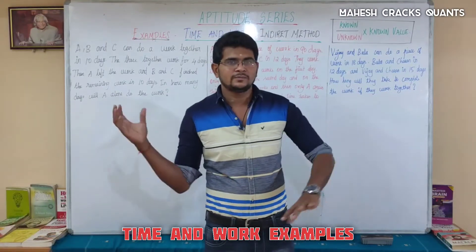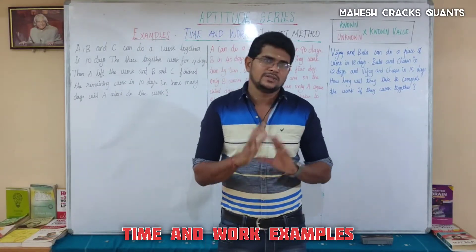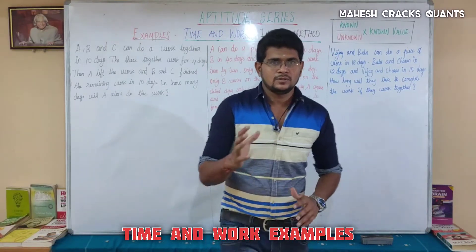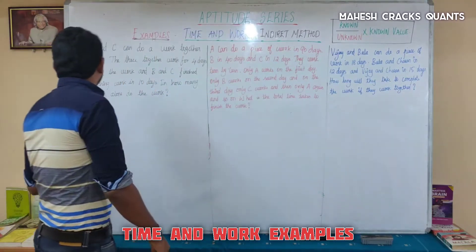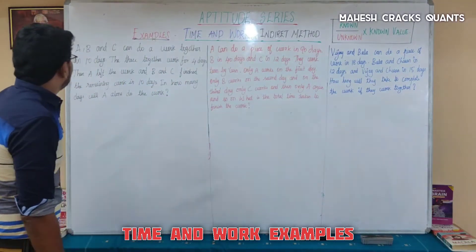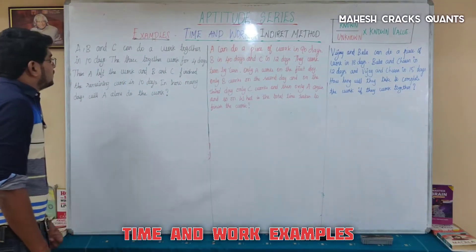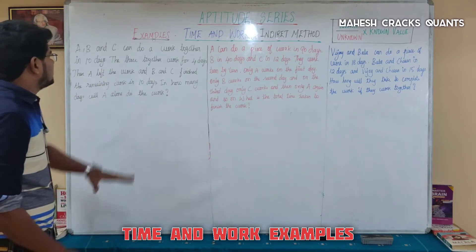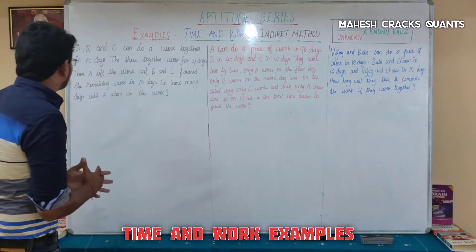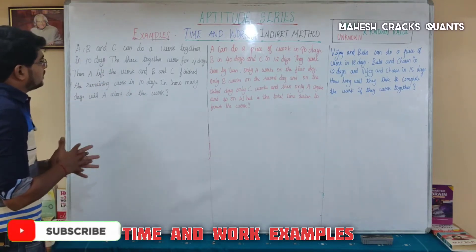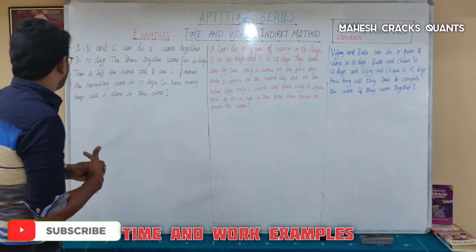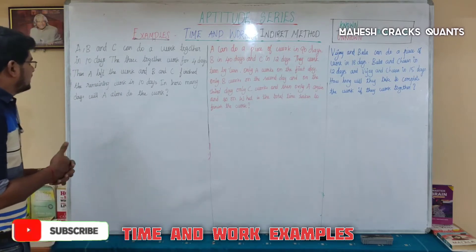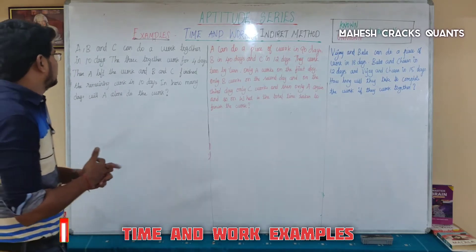What are we going to do now? This is an example continuation on Time and Work. A, B and C can do a work together in 10 days. The 3 together work for 4 days. Then A left the work and B and C finish the remaining work in 10 days. In how many days will A alone do the work?